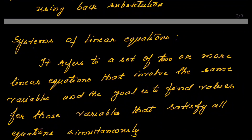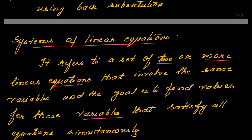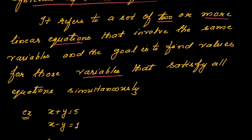What do you mean by systems of linear equations? It refers to a set of two or more linear equations that involve the same variables, and the goal is to find values for those variables that satisfy all the equations simultaneously.